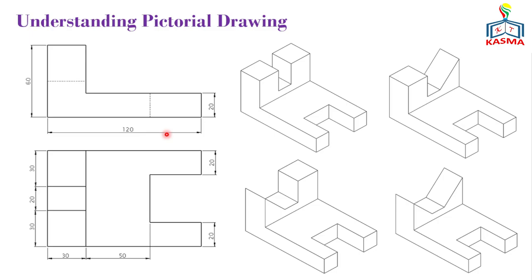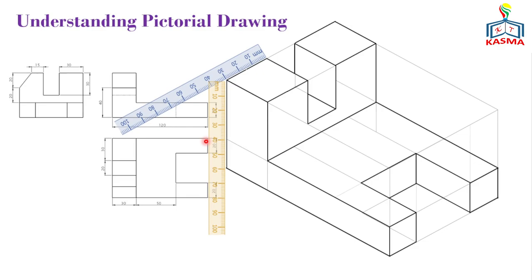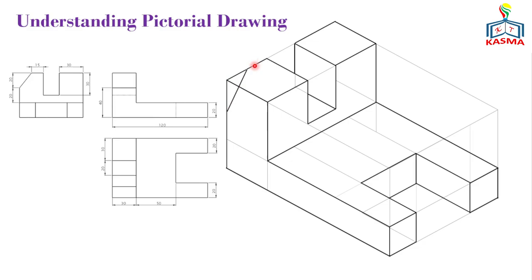Three multi-view drawings are necessary to fully define the given object. Let's add one inclined surface to finish the video. Looking from the right side view, the inclined surface is given as 15 millimeters horizontally and 20 millimeters vertically. Mark the two points and construct this line. Then project the additional lines along the three axes, and for this inclined line you will have one parallel line — giving you the inclined surface. Then erase the removed surface portions and you'll have the final layout.